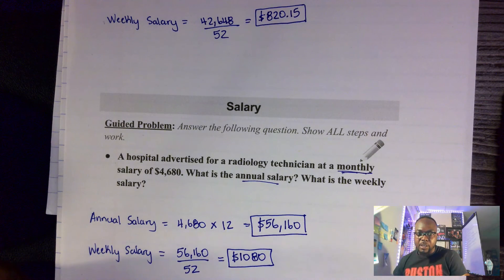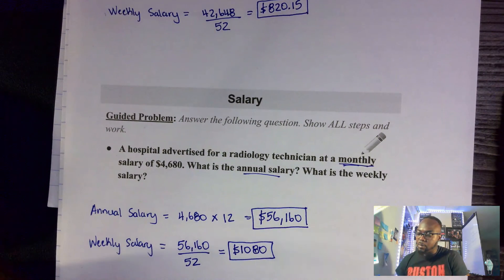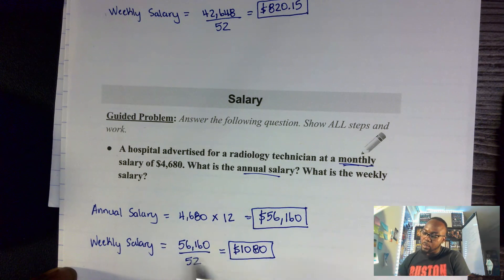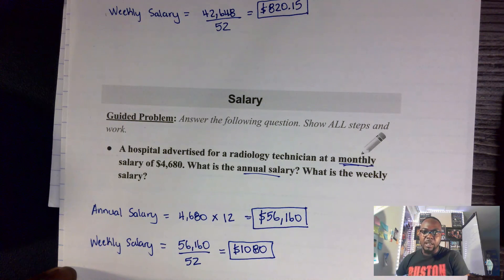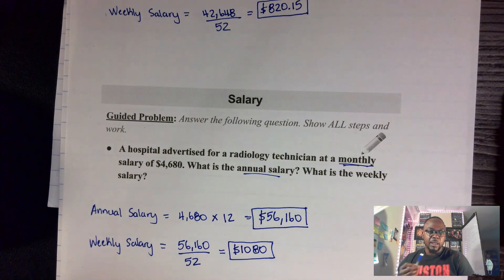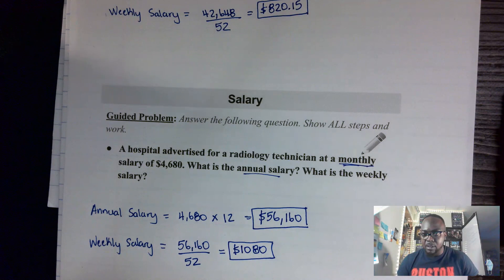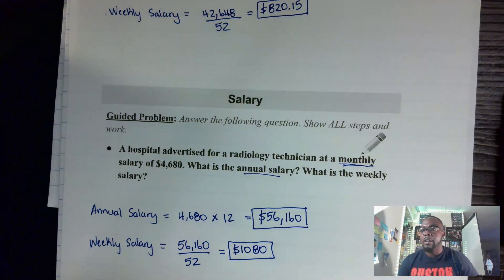On this problem we just had to work it in reverse. Remember: you cannot divide the monthly by 4 to get the weekly — always use the annual salary divided by 52. If you have any questions, feel free to reach out or come to office hours. Have a good one, bye!